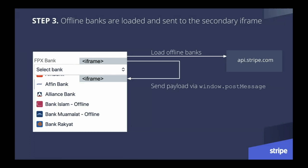The way we handle this is by creating two different iframes. The second iframe, which has the list of banks, is hidden. When the user clicks on the select bank dropdown, the primary iframe communicates to the secondary iframe using the post message API. This is where the secondary iframe containing the actual list of banks appears and stops being hidden. The primary frame also fetches offline bank information by contacting api.stripe.com, getting all the offline banks, and then passing that as a message to the secondary frame so when it opens, it already has that information available.